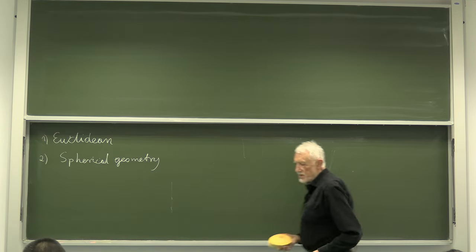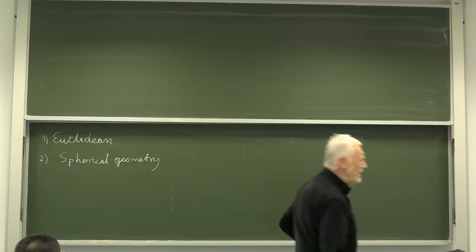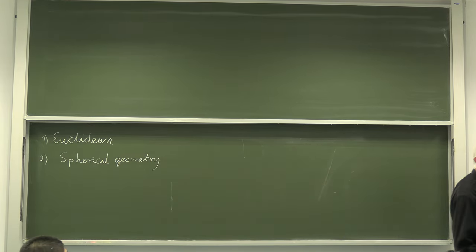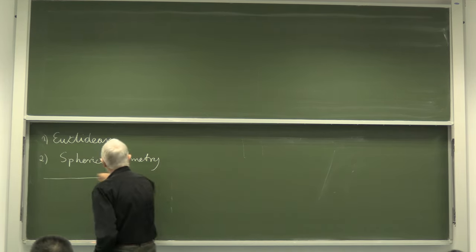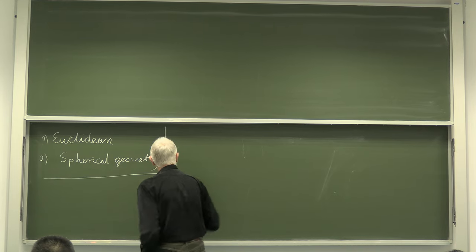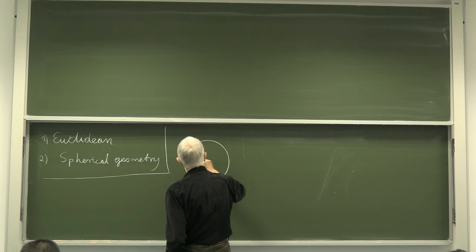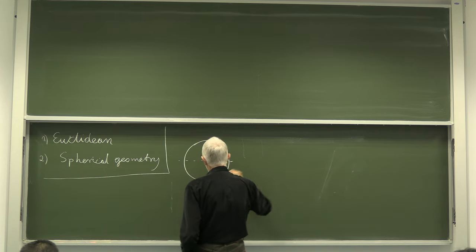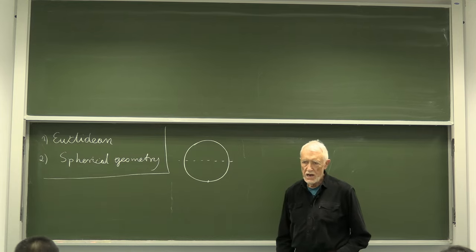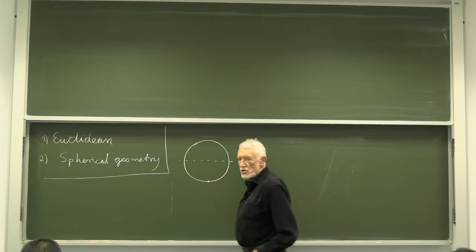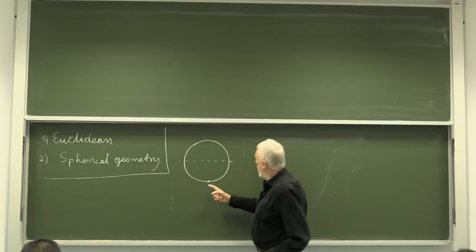Now I would like to show you a certain property of this spherical geometry which you probably know. Spherical geometry may be described by a projection — for instance, if you project everything from the south pole onto the plane.